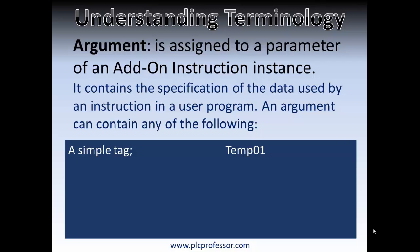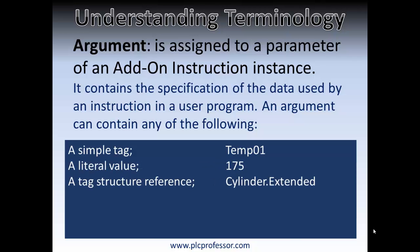An argument could be a simple tag, or it could be a literal value like a constant. It could also be a tag structure reference. For example, the argument cylinder.extended — where extended is an element in the data structure cylinder. If you think of a cylinder in terms of different pieces of data, you've got extended and retract: you told it to extend, you told it to retract, it's extended or retracted, or neither, or both.